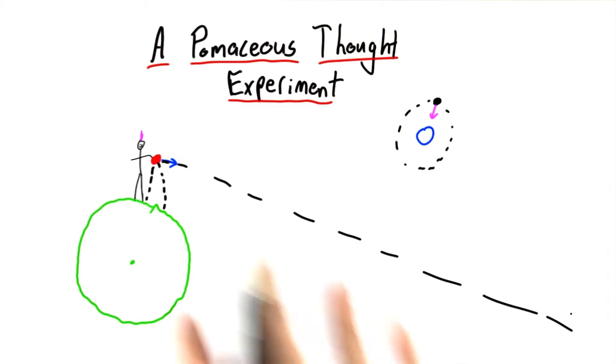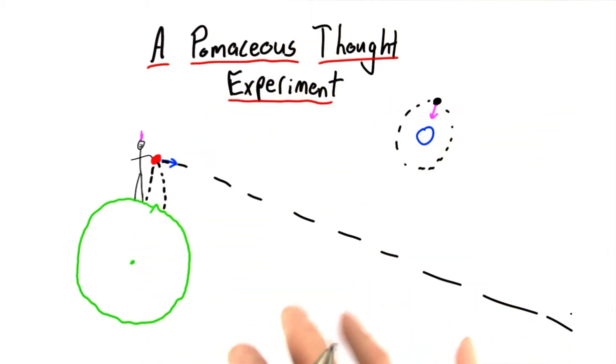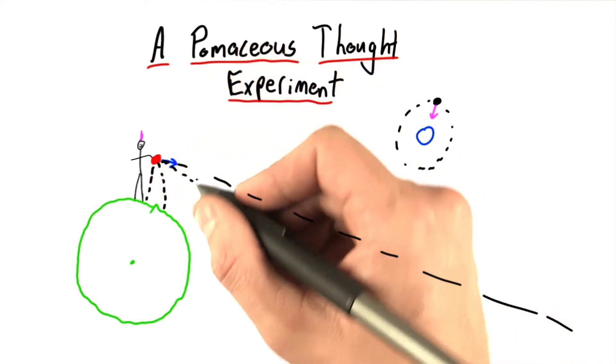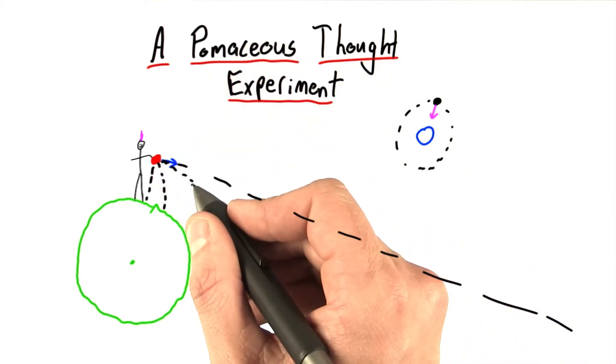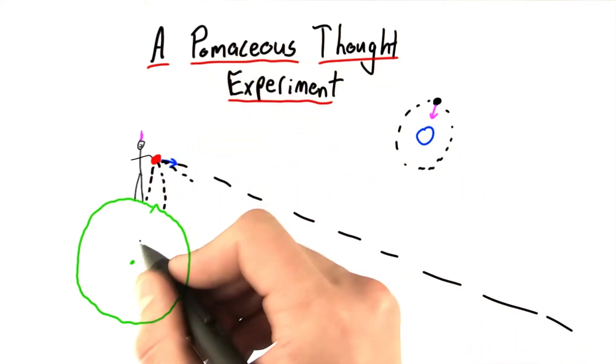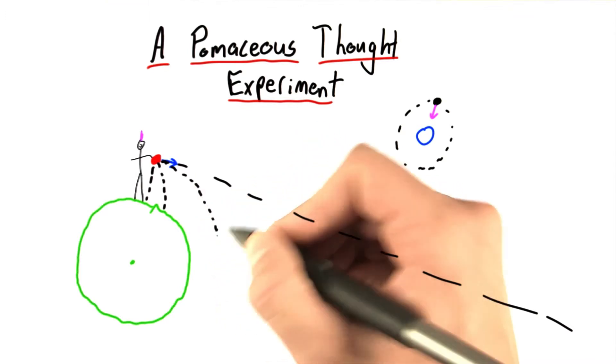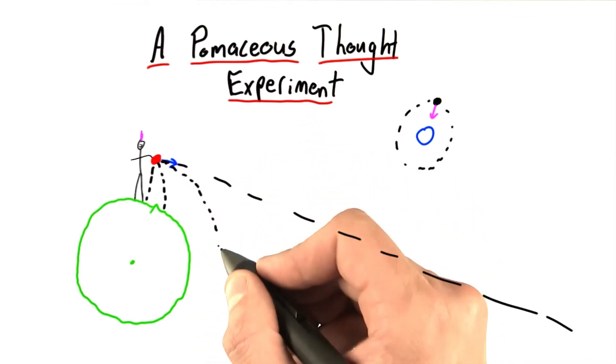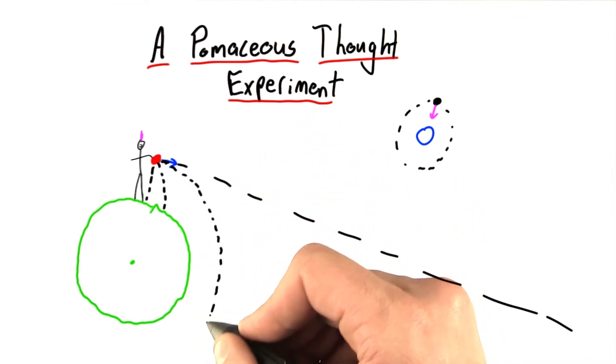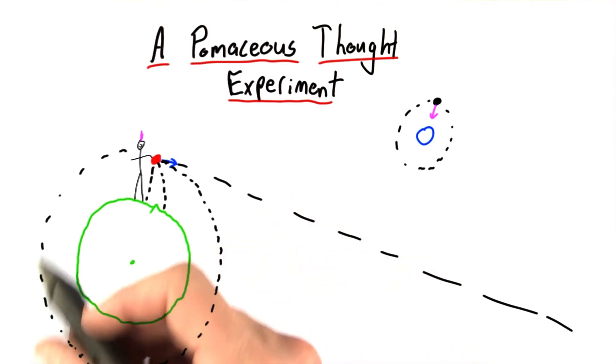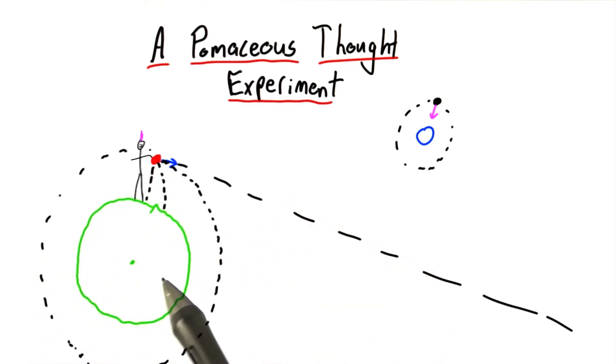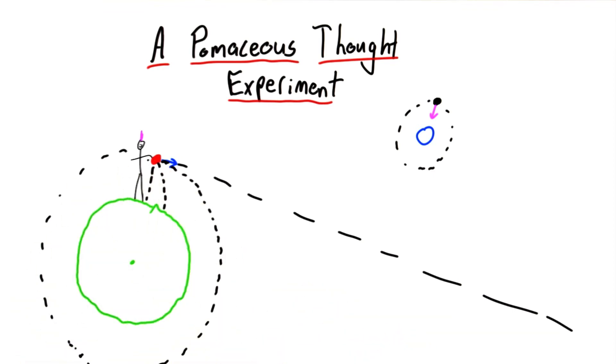Now, somewhere in between these extremes, if she throws it at just the right speed, the ball will travel a certain distance and fall a little bit towards the center of the Earth. It will travel another certain distance and fall again, and keep up this process of traveling and falling and traveling and falling in just such a way that the path it takes is a circular orbit around the Earth.